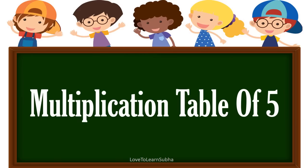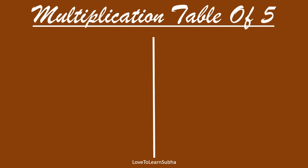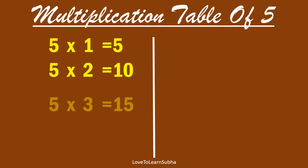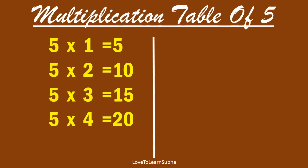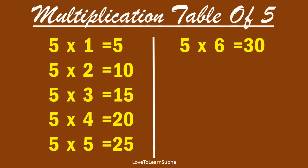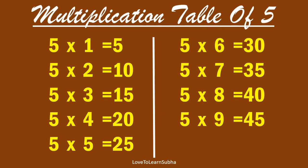Multiplication table of 5. 5 one is 5, 5 two is 10, 5 three is 15, 5 four is 20, 5 five is 25, 5 six is 30, 5 seven is 35, 5 eight is 40, 5 nine is 45, 5 ten is 50.